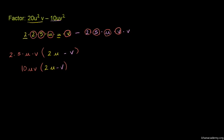When we multiply 10uv by 2u, we get 20u squared v. When we multiply 10uv by v, we get 10uv squared.